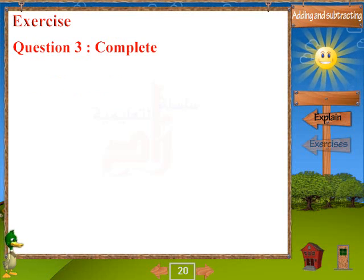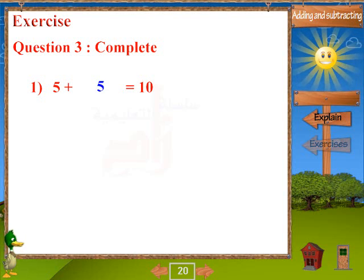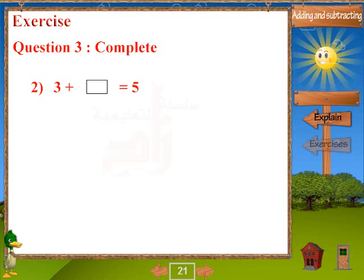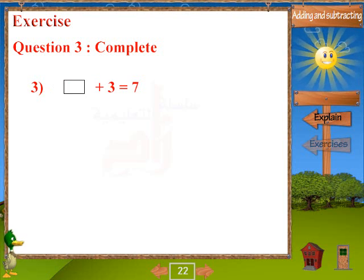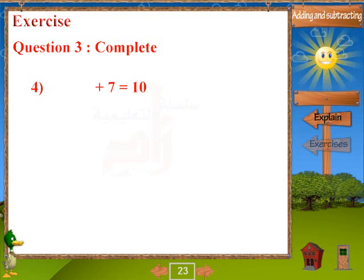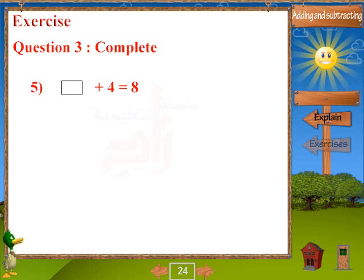Question 3: Complete. 1. 5 plus blank equals 10. 3 plus 2 equals 5. 2. 4 plus 3 equals 7. 3 plus 7 equals 10. 3. Blank plus 4 equals 8.